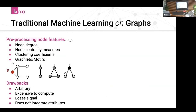One approach is pre-processing node features, which means collecting features to capture network structures such as node degree, node centrality measures, clustering coefficients, and graph motifs. You look at a node and try to capture local patterns of the graph in a pre-processing step. While that worked well for some time, it has many drawbacks. It's kind of arbitrary—we predefine how features look independently of the tasks we want to capture. Features are also expensive to compute and we lose signal that way.